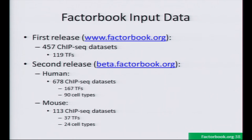The first release of Factorbook had about 550 ChIP-seq datasets. The new release has over 650 in more cell types, and we're also now introducing it for mouse. This still needs a little bit more work on my part, but it will be released very soon.